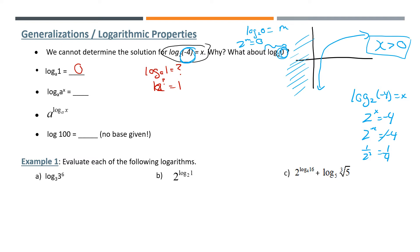The next general property is log base a of a to the power of x. Let me rewrite that — log base a of a to the power of x. What is that equal to? Rearranging: my base a to the question mark equals my input, which is a to the power of x. So you can clearly see it's equal to x. When your base and input number are the same, it's going to work out so that the exponent is the answer. You can memorize that property, or just work it out each time — I just figure them out, it takes about 10 seconds.